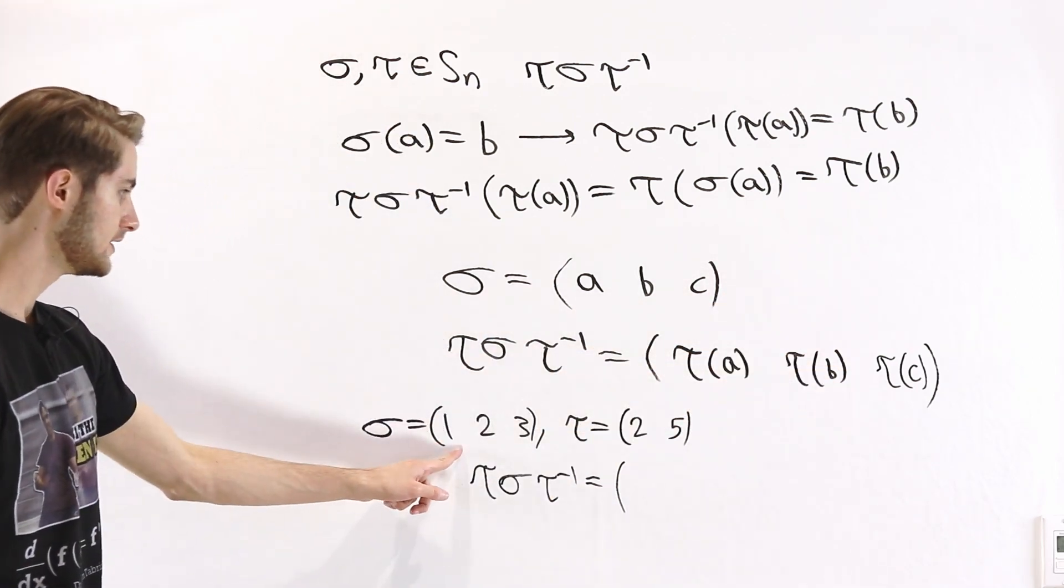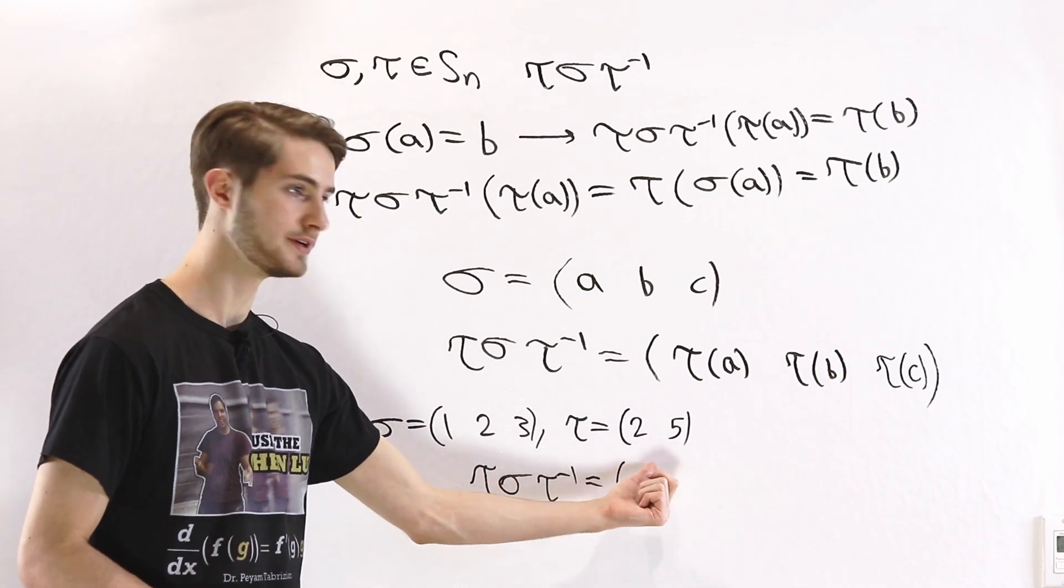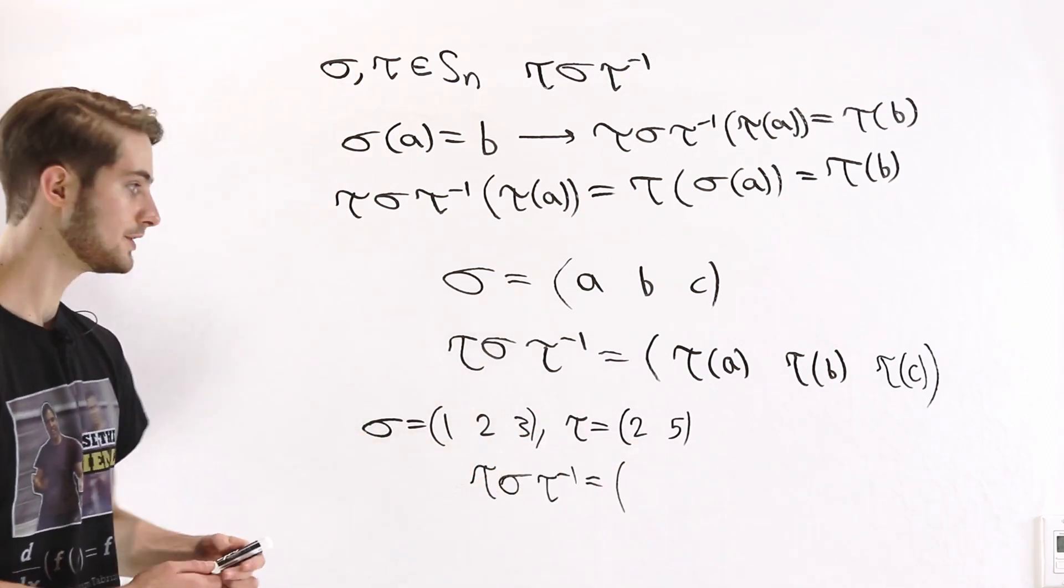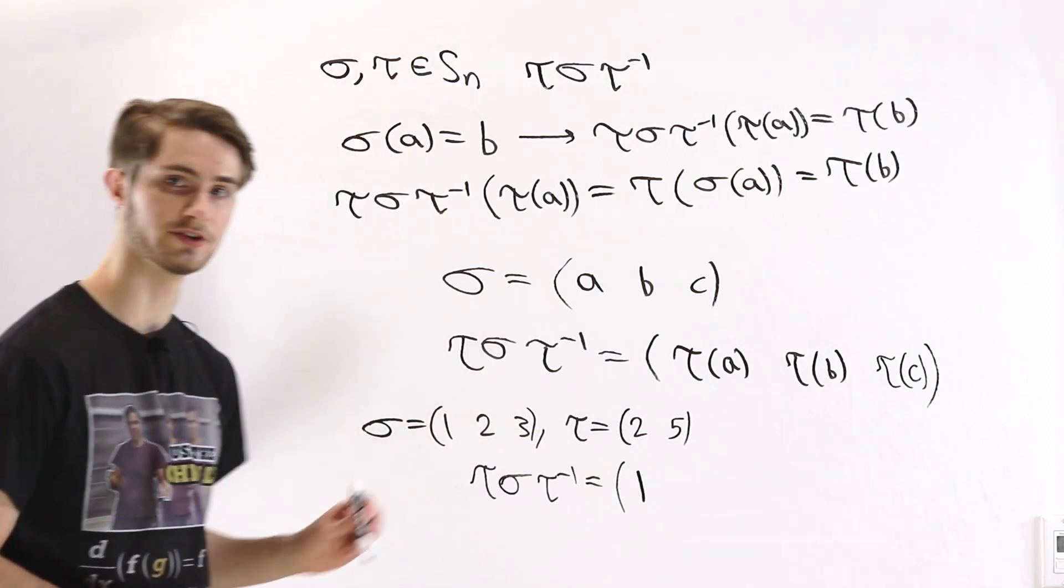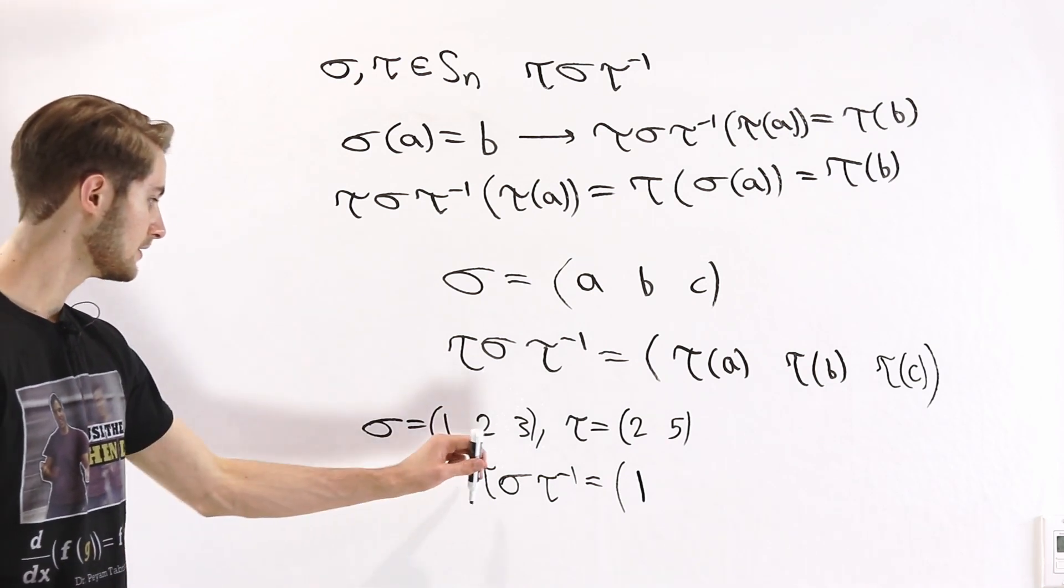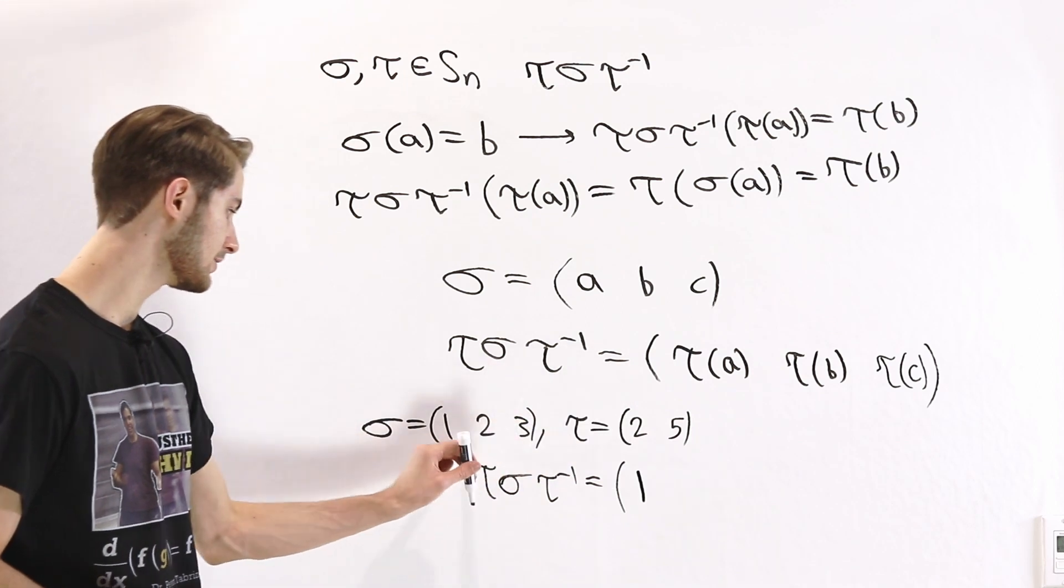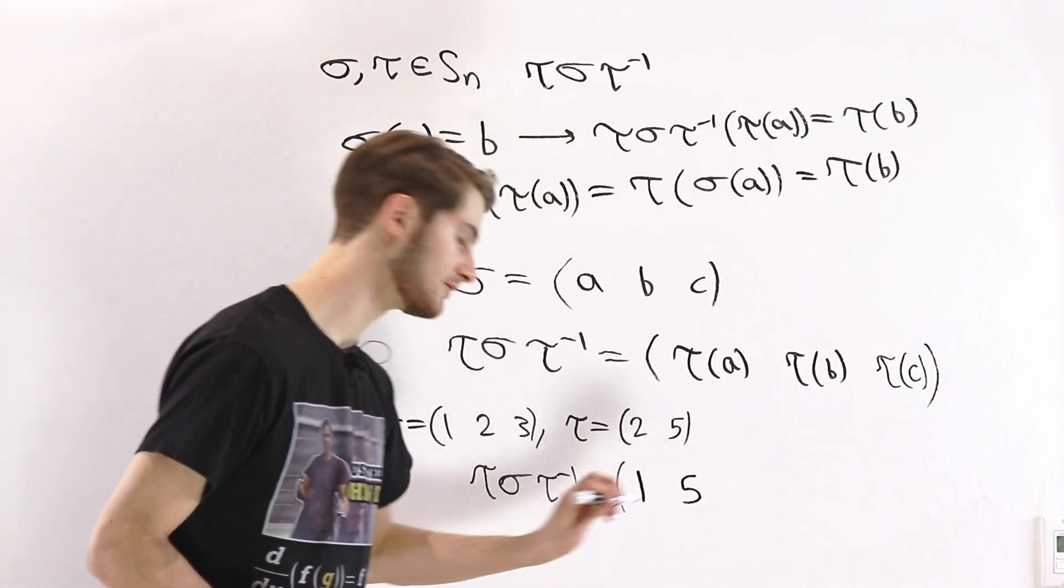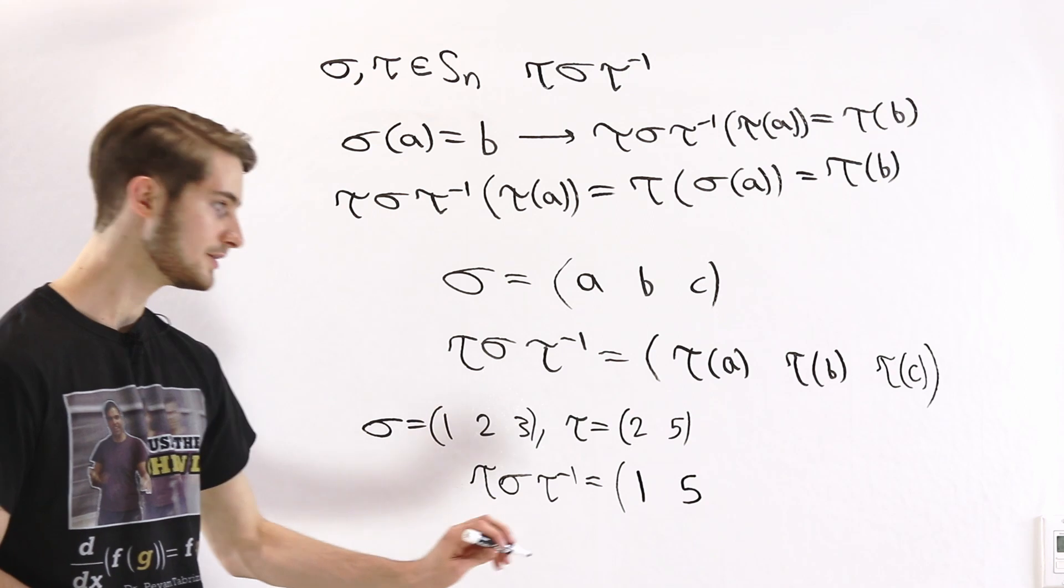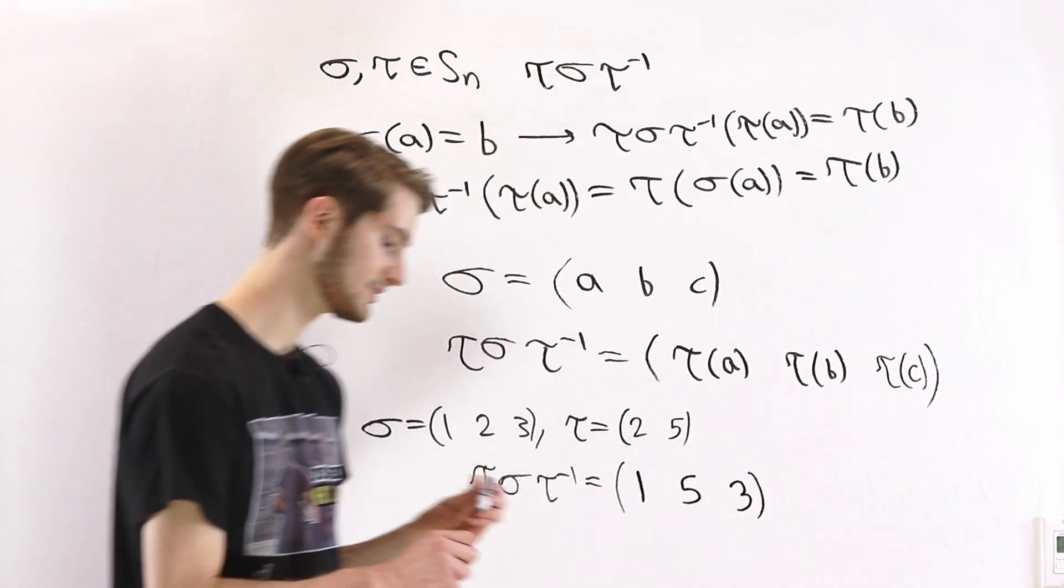So in this case, 1 is going to get sent to tau of 1. Well, tau doesn't permute 1 at all, so we're still going to have 1 as the first element here. If we look at 2, tau of 2 is equal to 5. So instead of going 1, 2, we're going to go 1, 5. And then tau doesn't move 3 at all, so that's going to be our third element still.